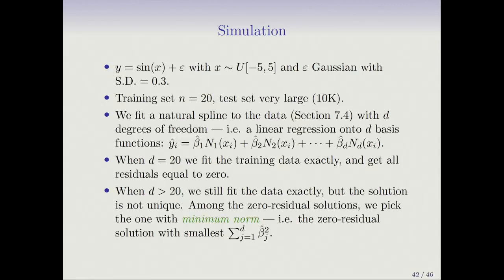So among the zero residual solutions, we'll pick the one with minimum norm — i.e., the zero residual solution with the smallest value of the sum of squares of beta j. We'll see how that plays a role.